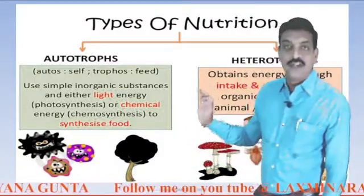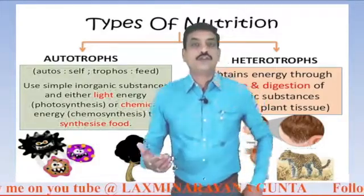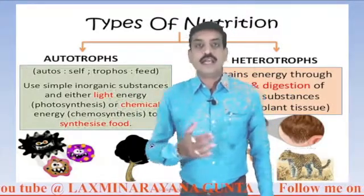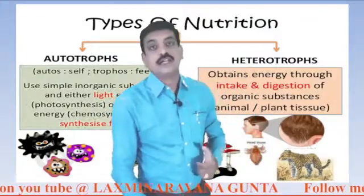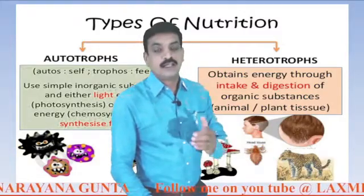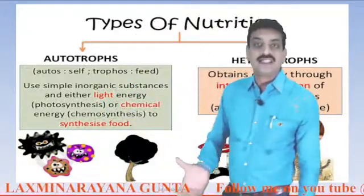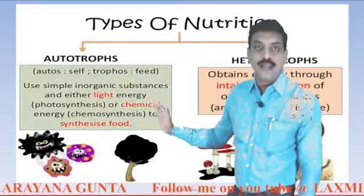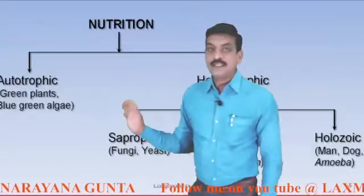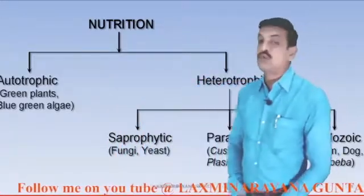Nutrition is broadly divided into two types: autotrophic nutrition and heterotrophic nutrition. Auto means self, trophos means feed — so autotrophs feed themselves. They synthesize their own food. The best examples for autotrophs are plants. Heterotrophs depend upon other organisms for their nutrition. They obtain energy through intake and digestion of organic substances — plant tissues or animal tissues. Examples of heterotrophs are animals and human beings. Heterotrophic nutrition is further divided into three types: saprophytic nutrition, parasitic nutrition, and holozoic nutrition.